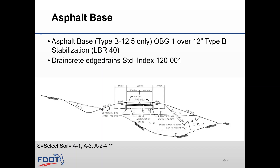Currently, there are two base options that can be used for rigid pavements. The recommended option is the asphalt base option. It uses standard materials and construction methods, provides rapid lateral drainage through drain crete edge drains, and also contributes to the overall structural performance of the concrete slab through full slab-based contact friction over the life of the design.